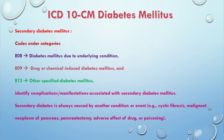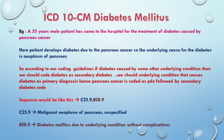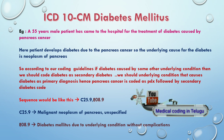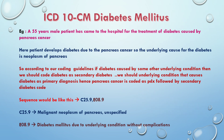For example, causes of secondary diabetes include Cystic Fibrosis, Malignant Neoplasm of Pancreas, Pancreatectomy, and Adverse Effect of a Drug or Poisoning. Let's discuss an example: a 55-year-old male patient came to the hospital for treatment of diabetes caused by pancreas cancer. The underlying cause for the diabetes is the neoplasm of the pancreas. According to our coding guidelines, if diabetes is caused by some other underlying condition, we should code it as secondary diabetes, and the underlying condition that causes diabetes should be coded as the primary diagnosis. Hence, pancreas cancer is coded as primary diagnosis, followed by the secondary diabetes code.